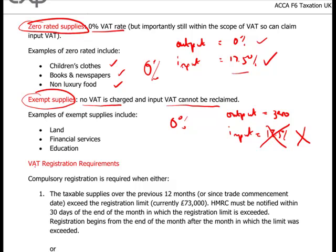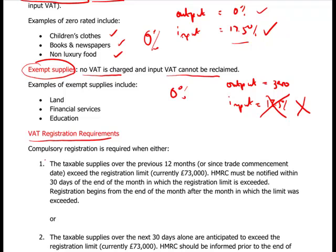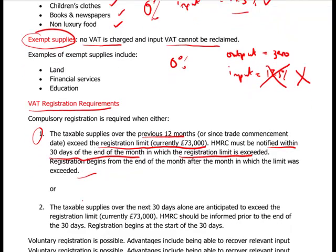VAT registration requirements: you don't have to be registered for VAT unless your taxable supplies over the previous 12 months are going to exceed the registration limit, which currently is £73,000. You must notify within 30 days of the end of the month in which the registration limit is exceeded. If you don't, there will be penalties and interest for being late. You must then register and become part of the system of input and output VAT accounting.